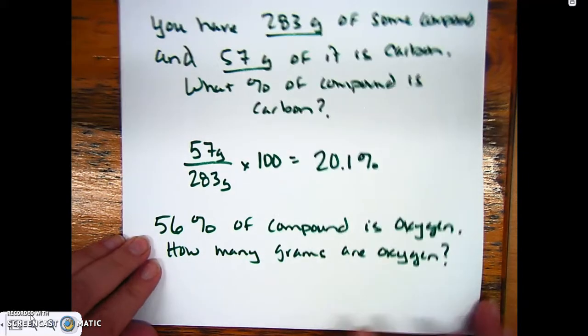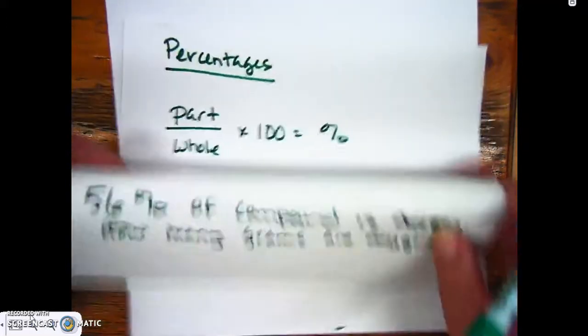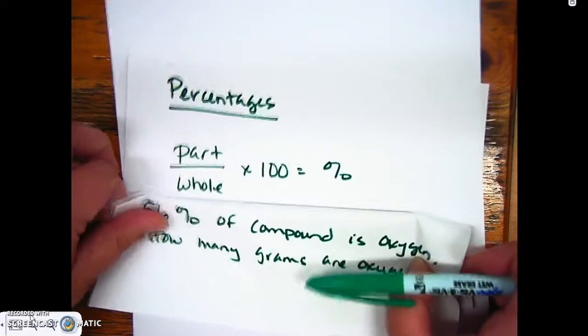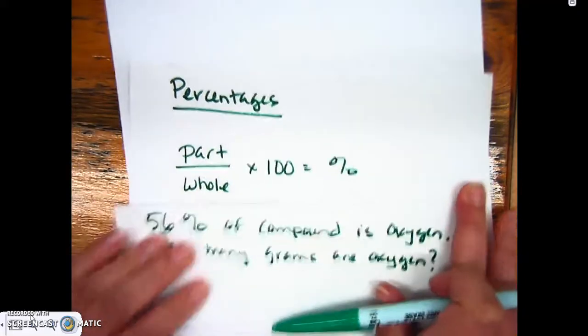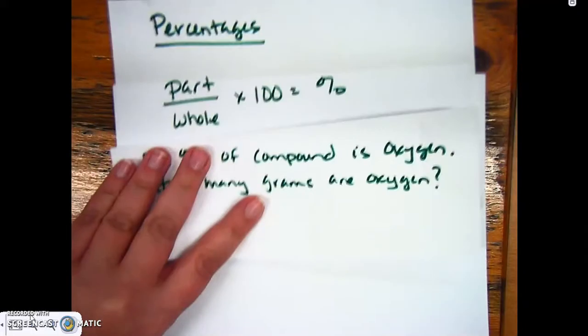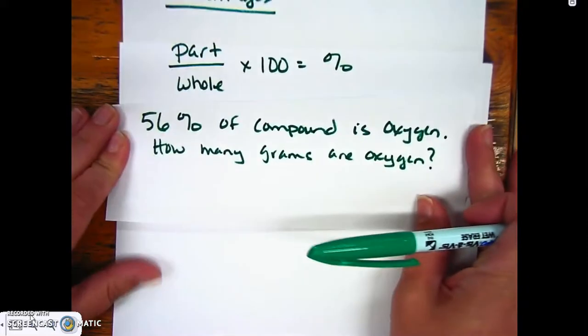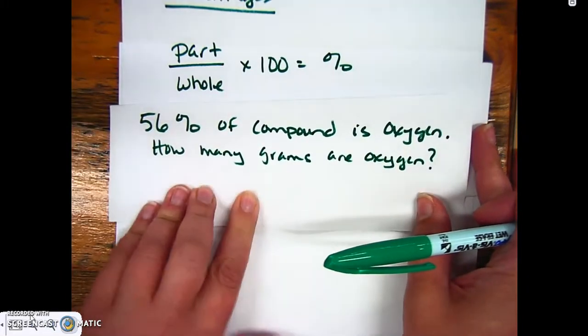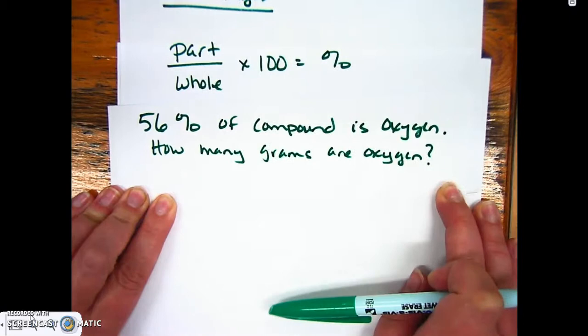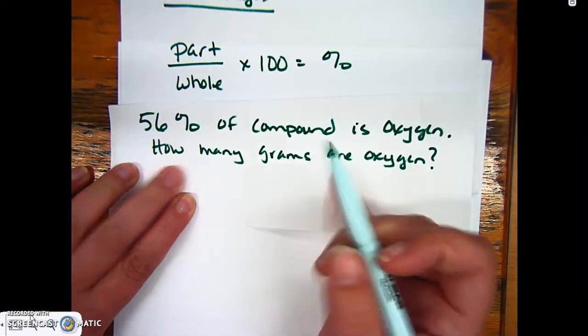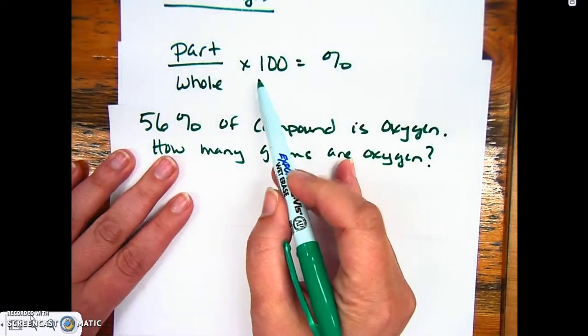We'd have to do a little algebraic rearrangement here. I've got my part over my whole times 100 equals my percent. If I wanted to solve for the part, we can do some algebraic rearrangement. We want to get the part by itself.